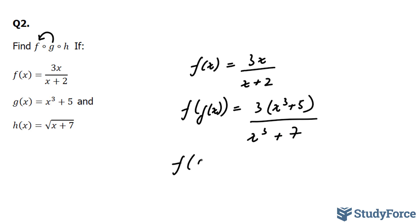f at g at g of x is equal to 3 times the square root of x plus 7 to the power of 3 plus 5 over x plus 7 square rooted to the power of 3 plus 7.